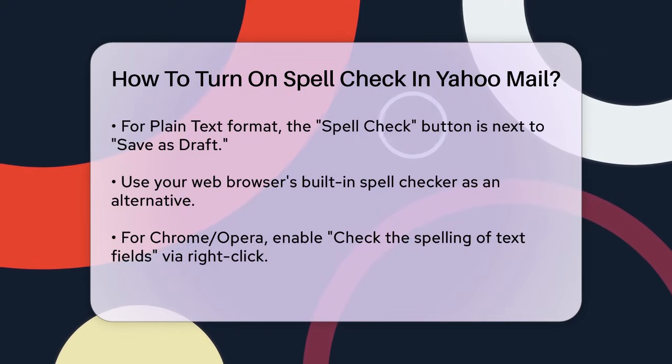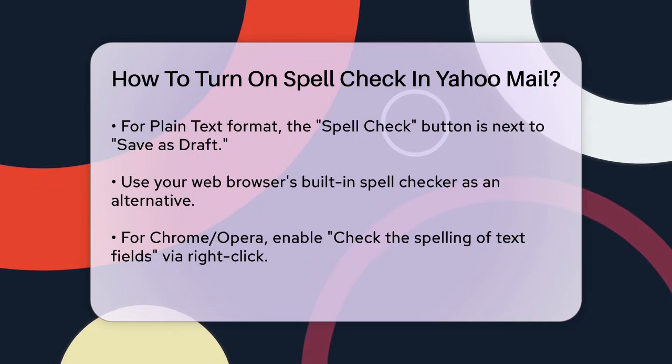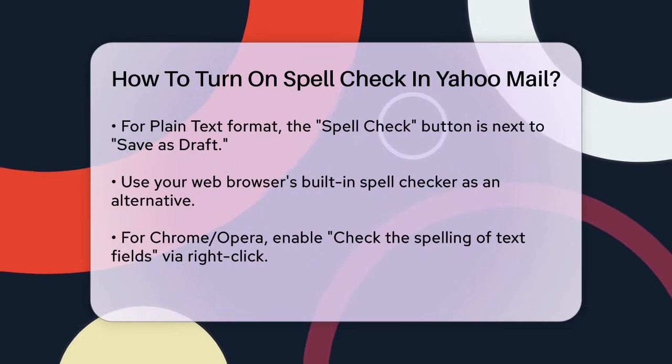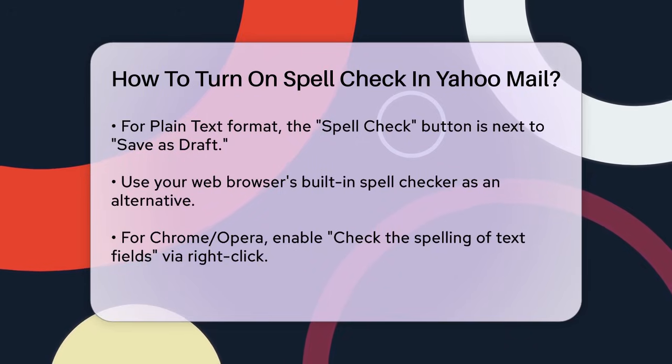For Mozilla Firefox, go to the options menu, then Advanced, and General. Check the box next to 'Check my spelling as I type.' You can download additional language packs if needed.